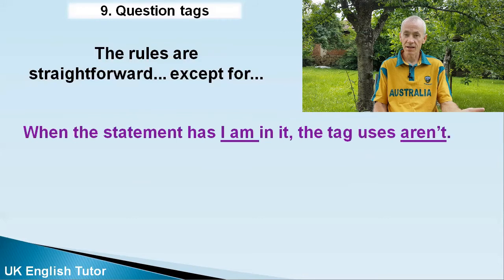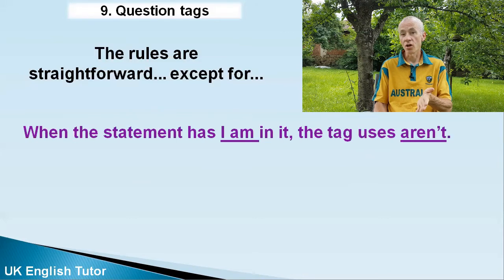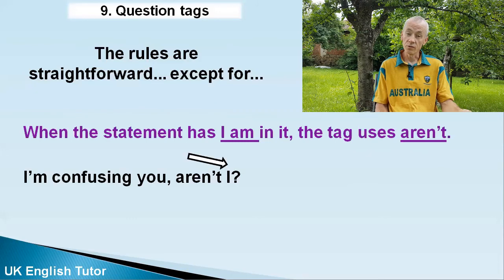I said that the verb in the tag has to match the verb in the statement — well, it's not exactly true. There are a few exceptions. When the statement has 'I am' in it, the tag doesn't use 'I am,' it uses 'aren't I.' For example: 'I'm confusing you, aren't I?' 'I can't help you — I'm making a video, aren't I?'